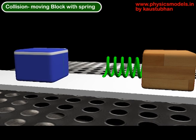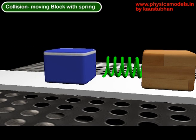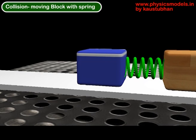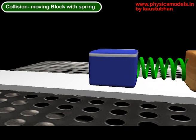So here is the animation for that. The blue box comes in at a velocity, the spring gets compressed, and finally it expands and the brown box moves away.